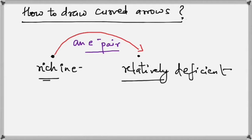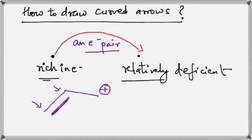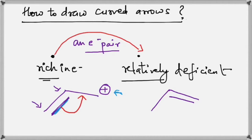Let's see some examples. Say you have a compound with a positive charge on the third carbon atom and a double bond between two other carbons. The positive charge is relatively deficient in electrons compared to the double bond, so the electrons shift from the double bond towards the plus charge. We draw a curved arrow like that, and in the new structure the double bond shifts to the right, while the plus charge shifts to the left carbon. These two are the resonance structures of this compound.